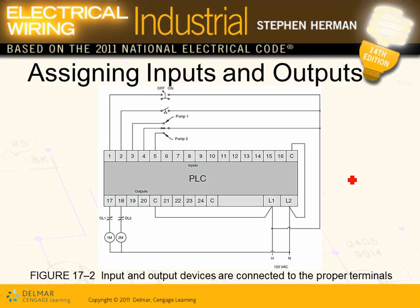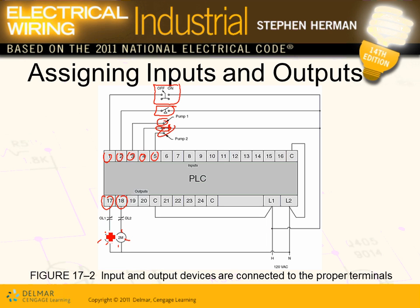This is how you bring the inputs into the PLCs. I have input number 1, input number 2, input number 3, input number 4, and input number 5. The outputs are 17 and 18, going to the contactors. That's how you wire the inputs of this system into these PLCs.